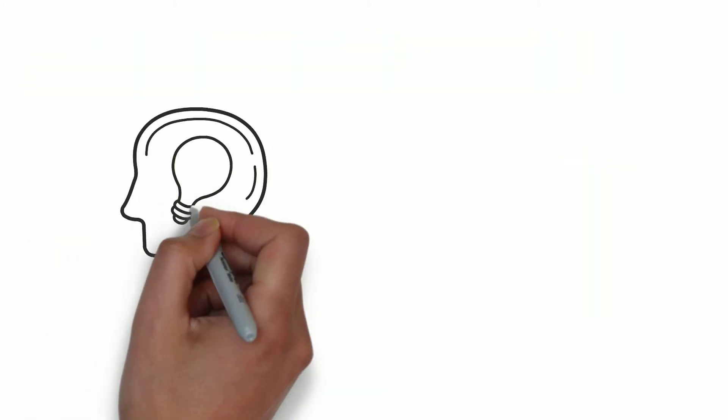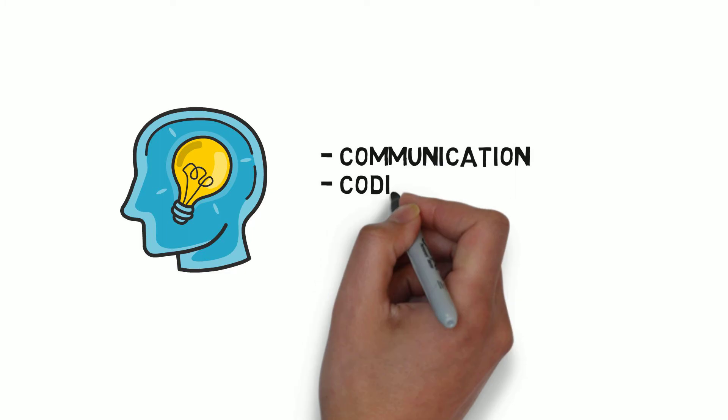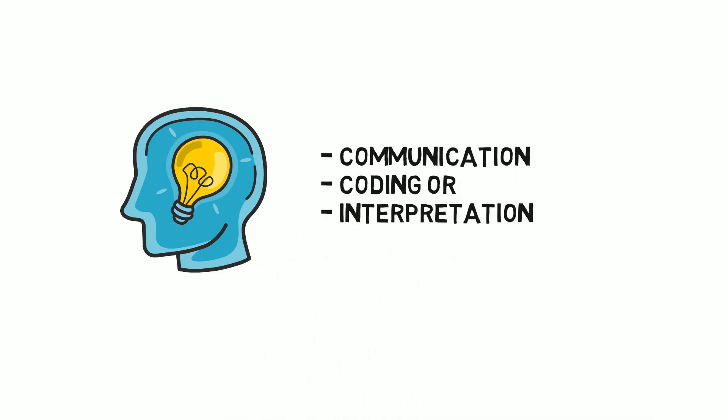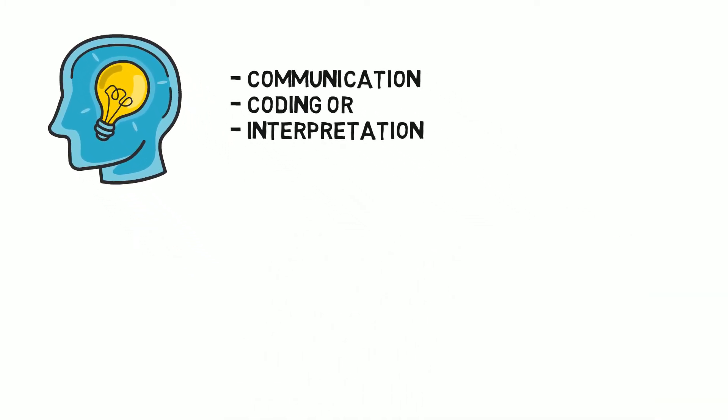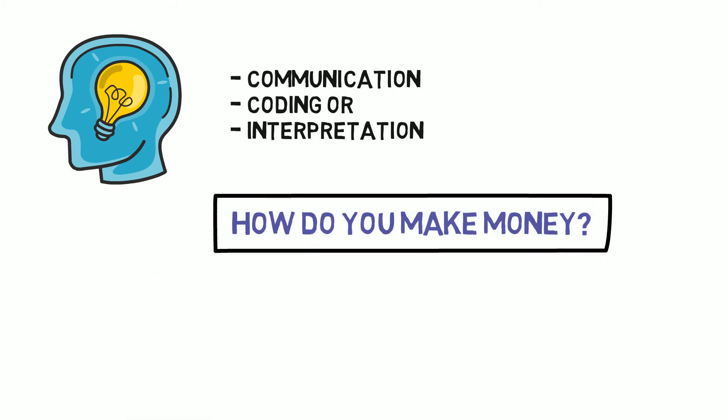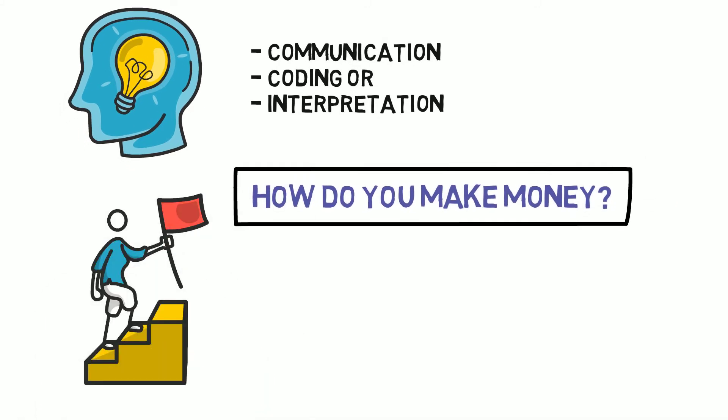So the skills are communication, coding, or interpretation. Just clarity of thinking. Now, the question is, how do you make money? Michael answers this as, you have to become a specialist in something.